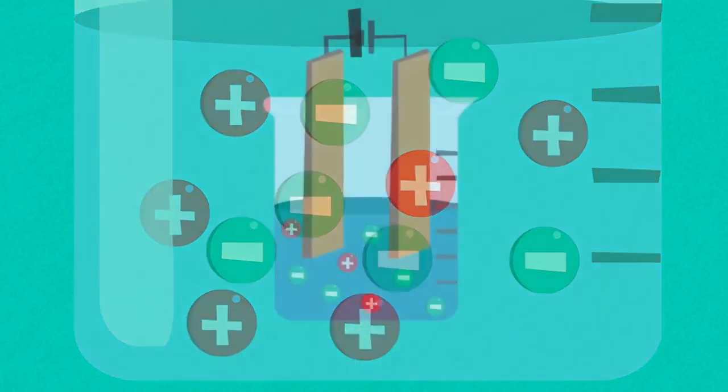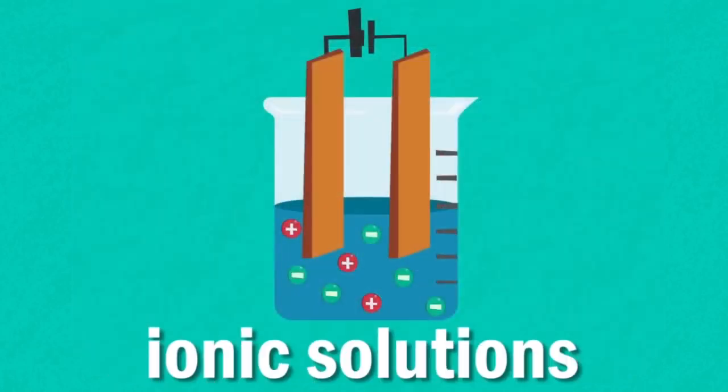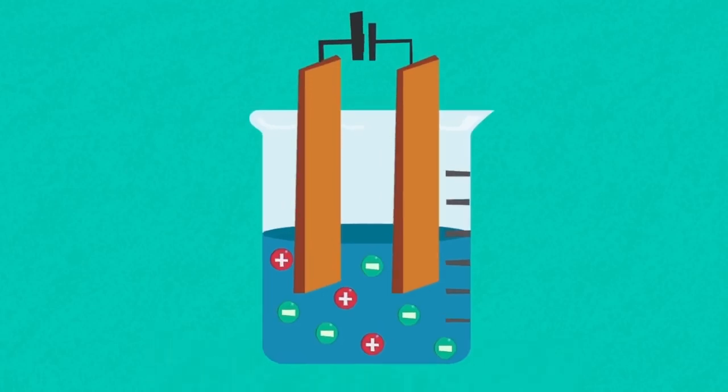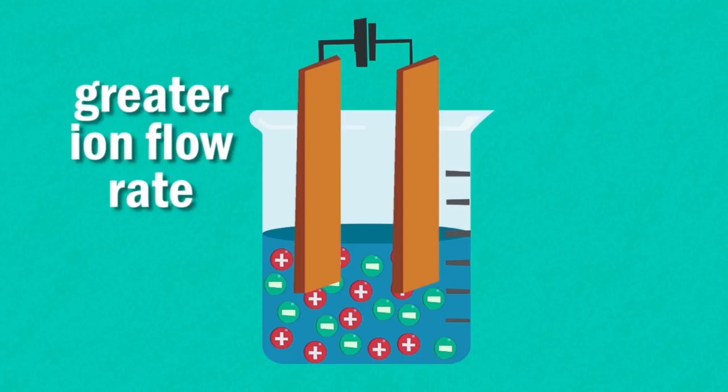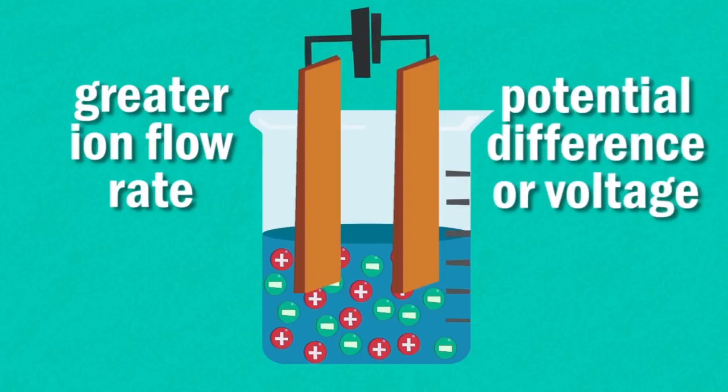Remember that electrolysis can also take place in ionic solutions as well as molten compounds. The more concentrated that solution, the greater the ion flow rate. Ion flow rate can also be increased by increasing the potential difference or voltage across the cell.